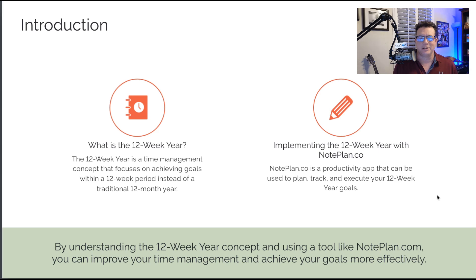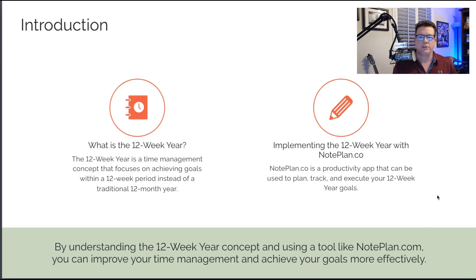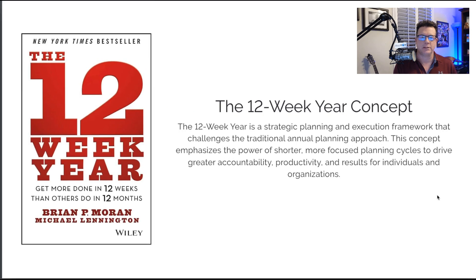The 12-week year is a time management system that was made famous in a book some years ago. NotePlan.co is a Mac-native application that's also recently been available on the web and runs on iOS. It helps you take notes during the day and implement an electronic bullet journaling system. What's unique about NotePlan is that it has features directly relevant to the 12-week year planning system.